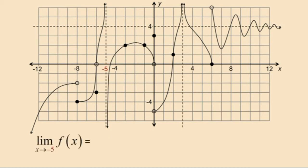Now let's look at the limit as x approaches negative 5 of f of x — remember this is a two-sided limit. Notice that the values of f of x are approaching positive infinity as x approaches negative 5 from the left, and negative infinity as x approaches negative 5 from the right. Here we can clearly see that our one-sided limits are not approaching the same value.